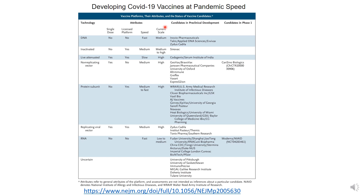There are a number of different technologies being used. A live attenuated vaccine is a weakened version of the pathogen. While it's highly effective and likely to only take a single dose, a lot of care needs to be taken to make sure that this candidate does not cause disease by itself.